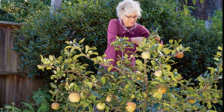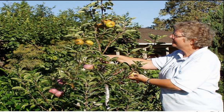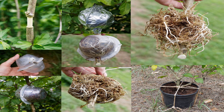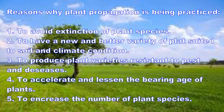All these advancements became possible through an agricultural technology called plant propagation. Plant propagation is a method of reproduction, increase, or multiplication of plant species. The reasons why it is being practiced are: to avoid extinction of plant species, to have new and better varieties of plants suited to soil and climate conditions, to produce plant varieties resistant to pests and diseases, to accelerate and lessen the varying age of plants, and to increase the number of plant species.